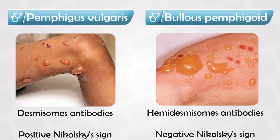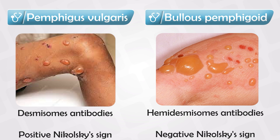These blisters are tense because there is a full dermis supporting them. If you leave them alone, they will go away as the fluid is absorbed over time, leaving no scars. And if you rub the skin, there will be no separation between the cells because they are very well connected together — so we have a negative Nikolsky sign.